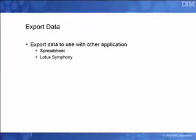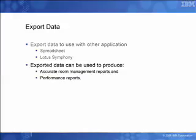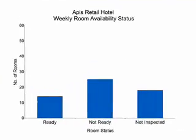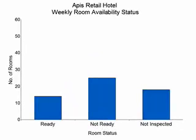Now Vanessa and the management team have begun to yield the benefits of their automated room inspection process. With Lotus Forms Turbo, Vanessa can export room inspection data for use with other applications such as spreadsheets. Exported data can be used to produce accurate room management and performance reports. Vanessa exports all inspection reports into a single chart to show which rooms have passed inspection and are ready for new customers, which rooms failed inspection and are out of service, as well as which rooms have not yet been inspected.